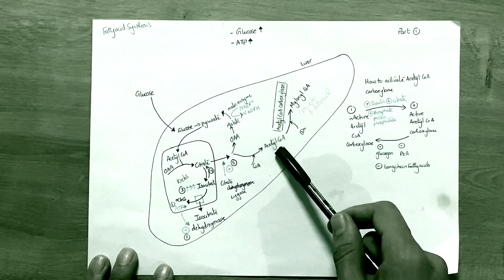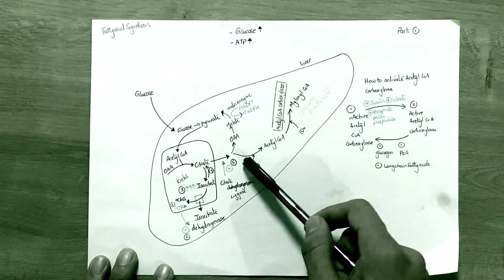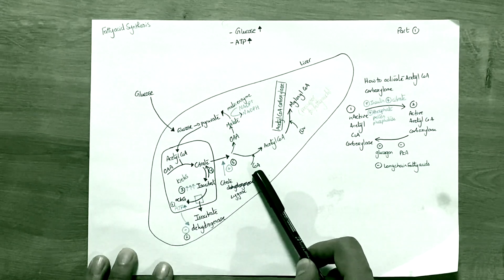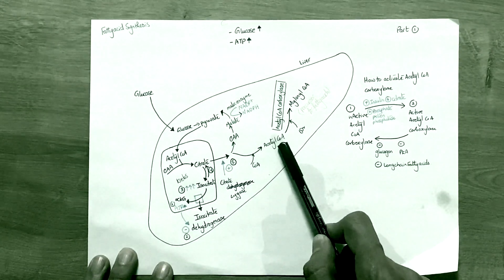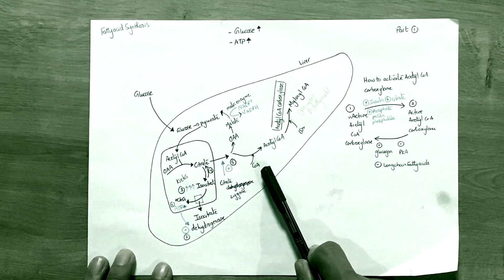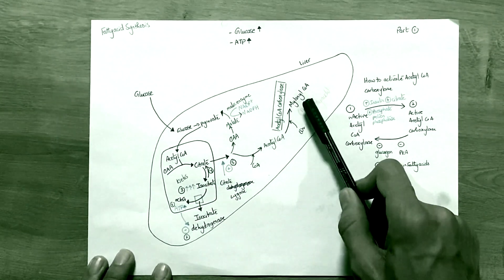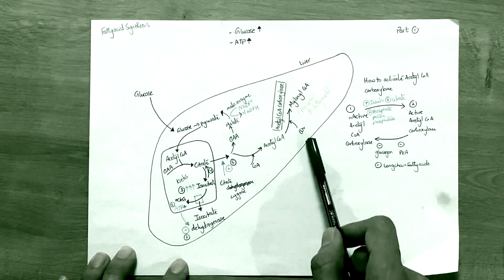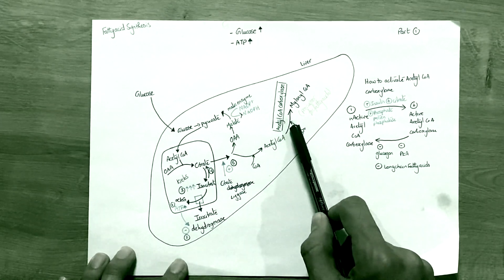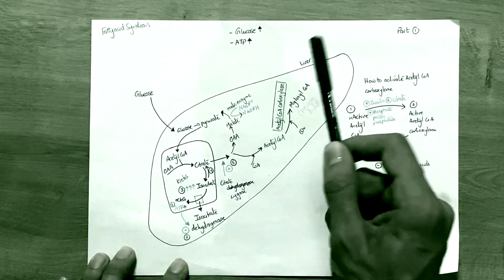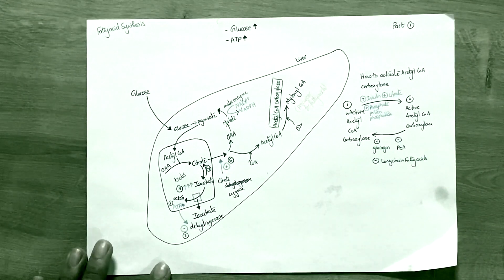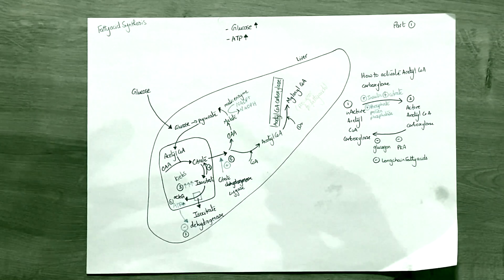This step here, back to the acetyl-CoA, citrate ligase gets CoA involved and produces acetyl-CoA by converting citrate into acetyl-CoA by adding CoA. Then acetyl-CoA converts into malonyl-CoA by the addition of CO2, and because CO2 is added, the enzyme acting here is called acetyl-CoA carboxylase. This is basically the whole process of fatty acid synthesis.